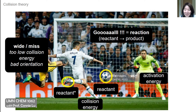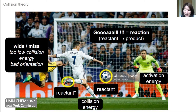When impact happens, the energy of that collision must be greater than or equal to the activation energy of the reaction, represented by the goalie. A successful reaction — scoring a goal — is when the ball turns into product. But if the kick has too low energy, the goalie defends it, or if the orientation is bad, the ball misses the goal. So orientation of the collision is just as important as the energy.